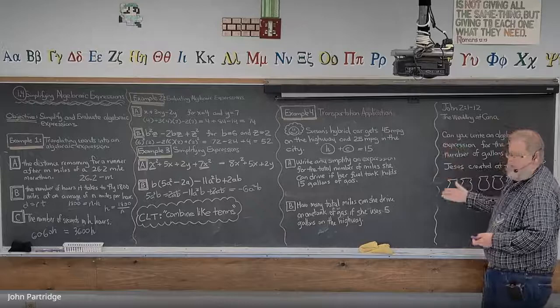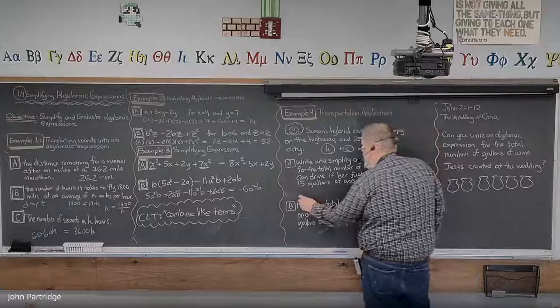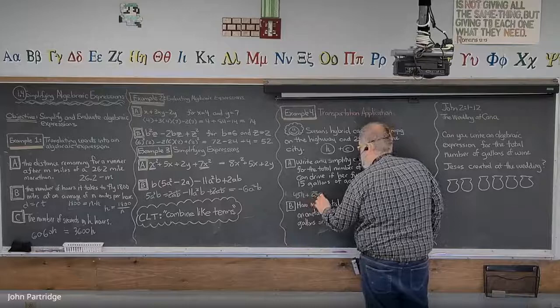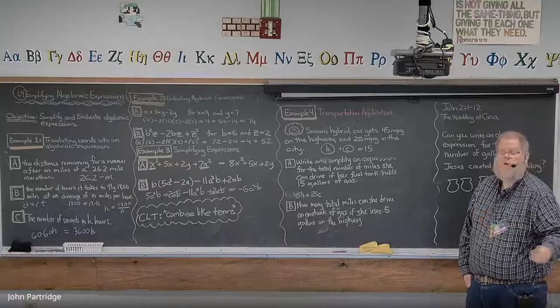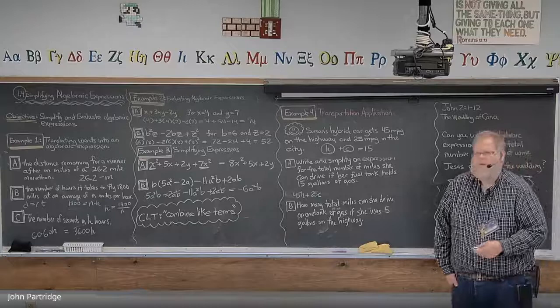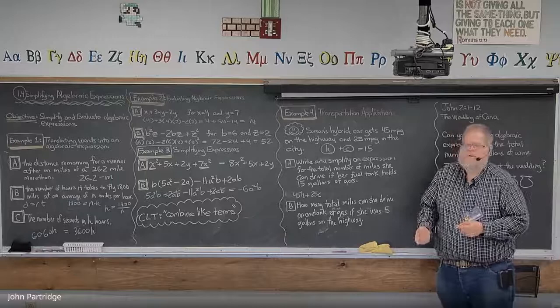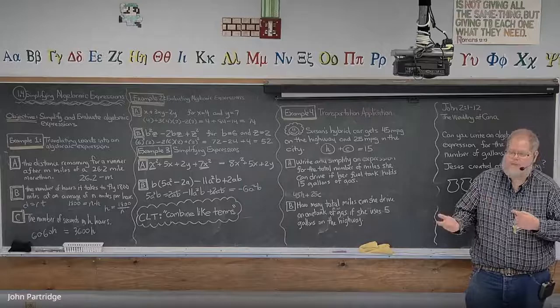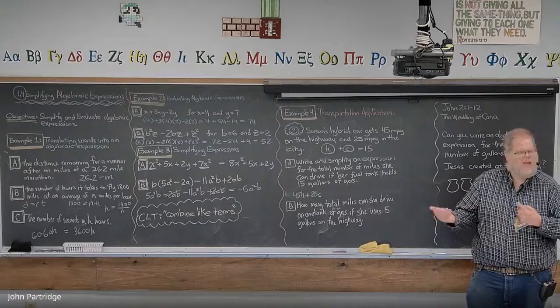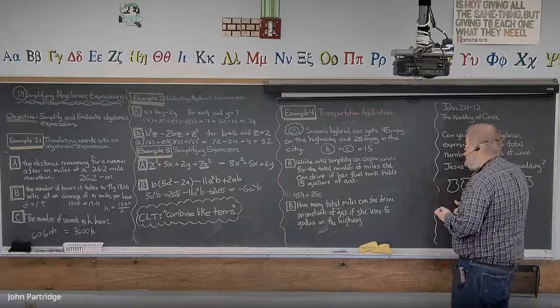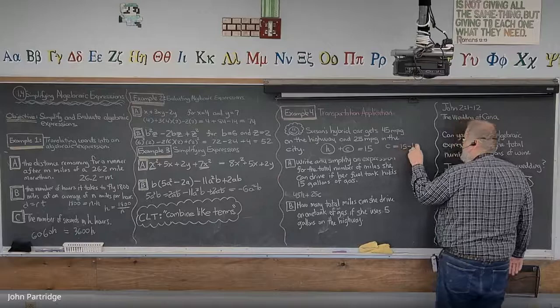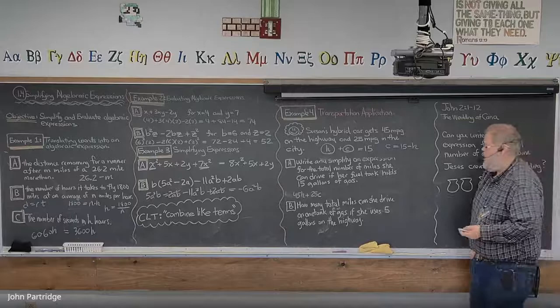H plus C should be 15 because we're assuming she goes on a full tank, and we know from the problem she has 15 gallons. Now let's take the miles per gallon and get the expression for the total miles. That would be 45H plus 25C, and that expression represents the total number of miles she can travel. But we can do better — we can reduce this expression from two variables to one. If I solve for C, I know that C equals 15 minus H — whatever she uses on the highway, what's left is used in the city.